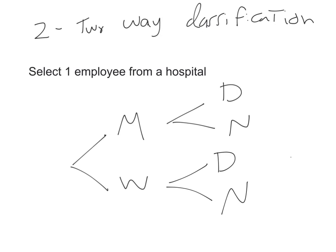Notice that you only selected one employee. These two stages do not represent two people selected — it is actually one person. One time we think of classification by gender, and then we look at the job. So that's a two-way classification: gender and job — two steps of thinking, but we are selecting only one person.